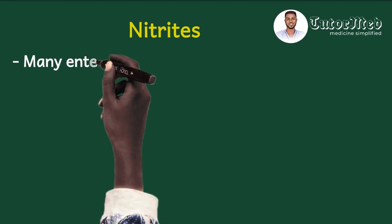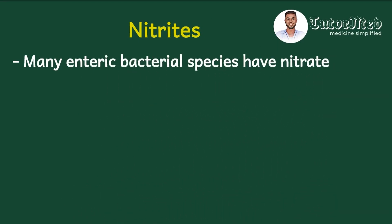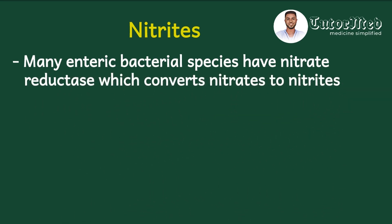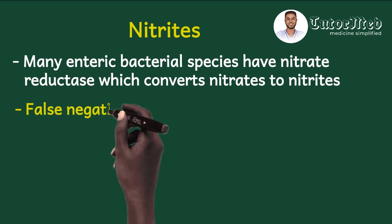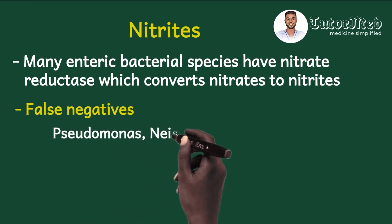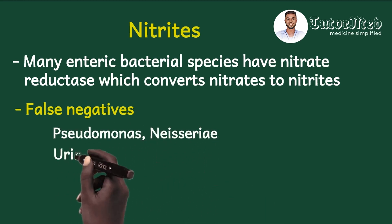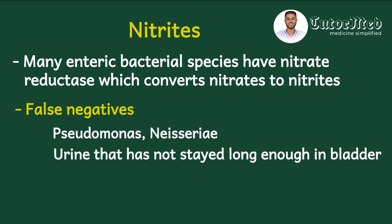The next parameter is nitrites. Many enteric bacterial species like E. coli, which commonly cause urinary infections, have nitrate reductase — an enzyme which converts urine nitrates to nitrites. So if your dipstick tests positive for nitrites, it means these enteric bacterial species are present, probably from a UTI. However, you can have false negatives if the UTI is caused by an organism that does not have this enzyme, such as Pseudomonas and Neisseria.